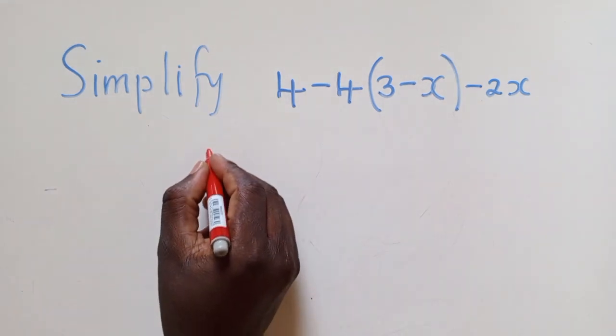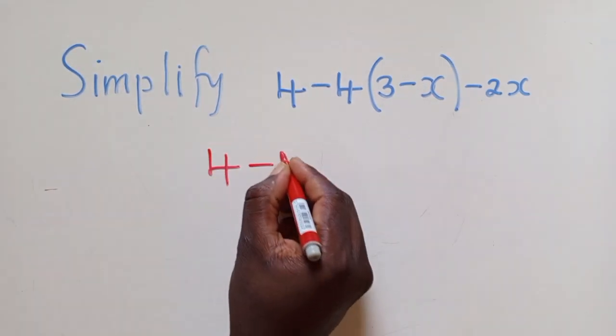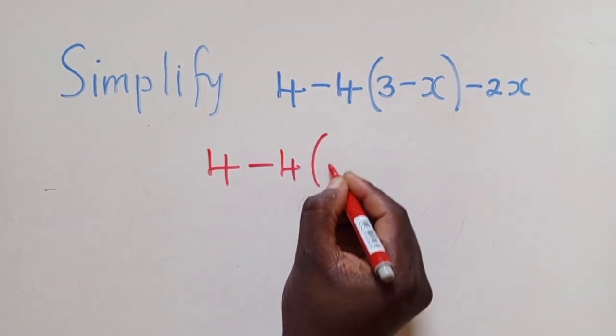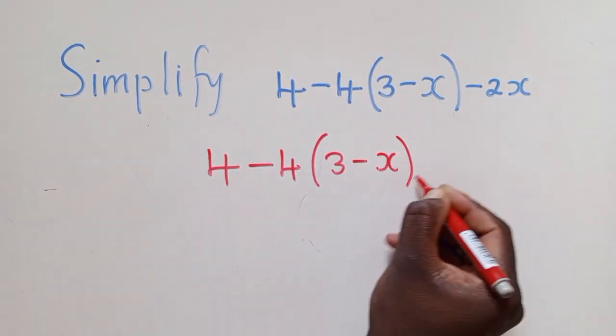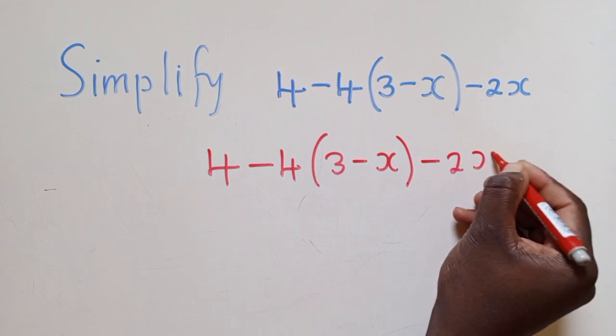We first need to copy 4 minus 4, open bracket, 3 minus x, close bracket, minus 2x.